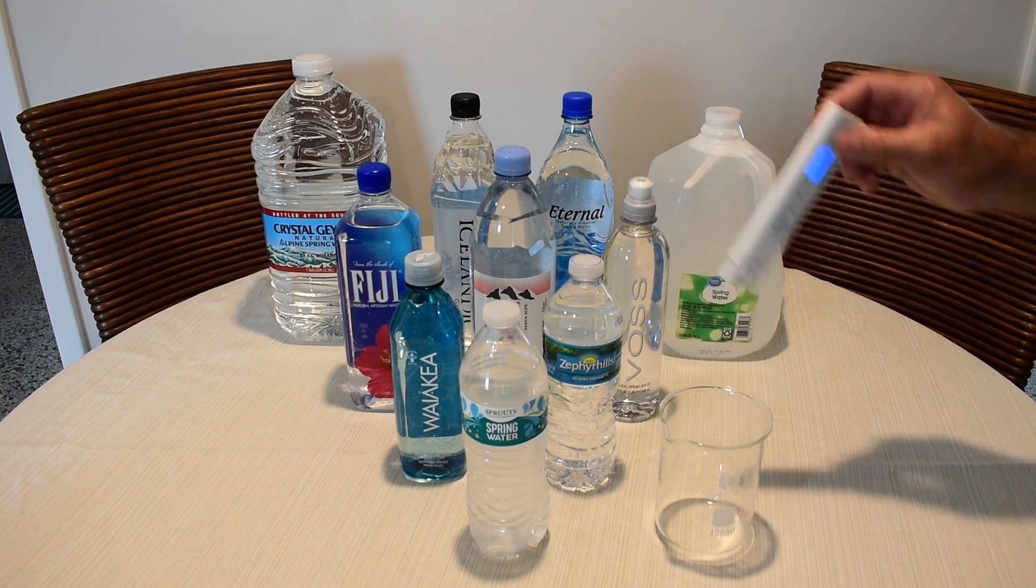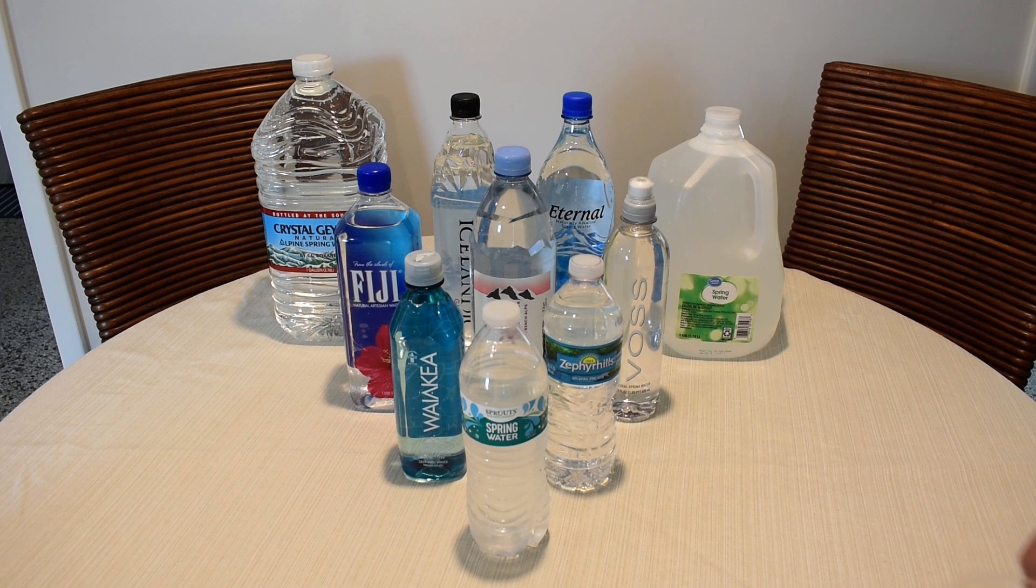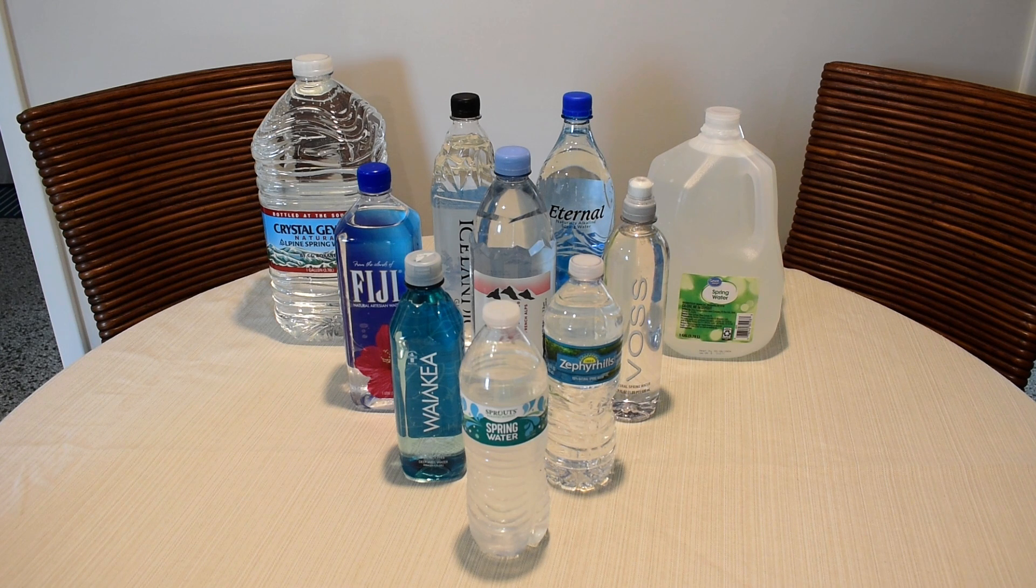But before I test each one of these different brands of drinking water, first let's take a reading of the tap water in my house, and then the water that's going through a GE carbon block, it's around 50 bucks from Home Depot, to see what the difference is between the tap water in my house and the water that's filtered using the GE filter.